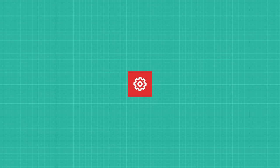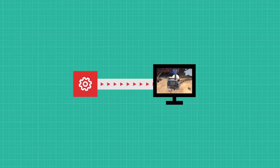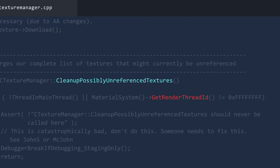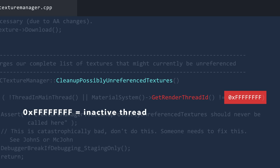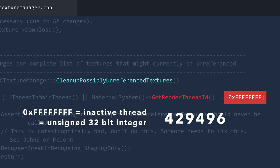Of course, if we're still actively rendering things, it would be a bad time to try and start unloading textures. So the start of the cleanup function checks that the current material system render thread is 0xffffffff. This number is presumably used as an indicator of an inactive thread because as an unsigned 32-bit integer, it represents the number 4,294,967,295. And if you manage to create that many threads, textures being unloaded while in use is the least of your concerns.